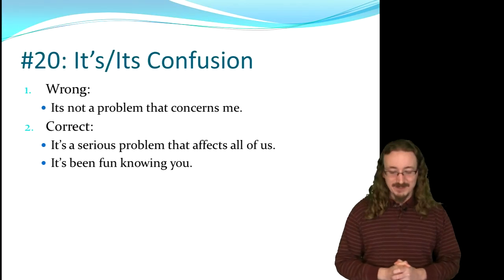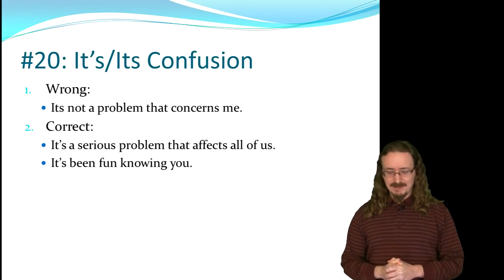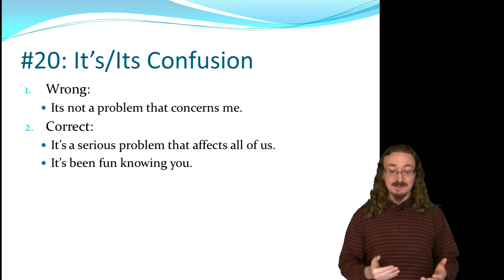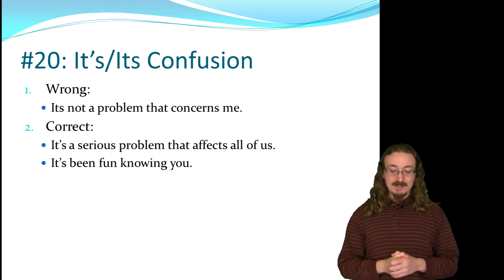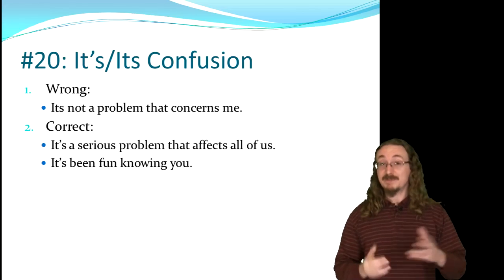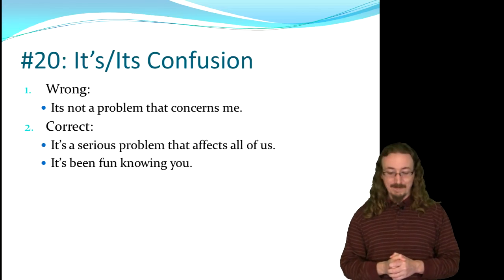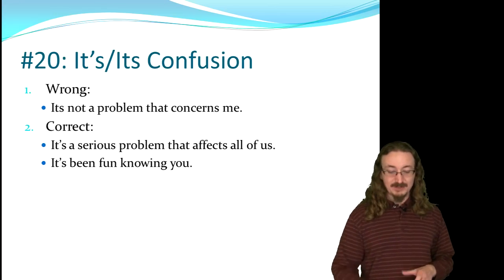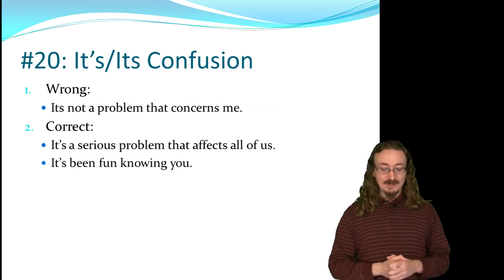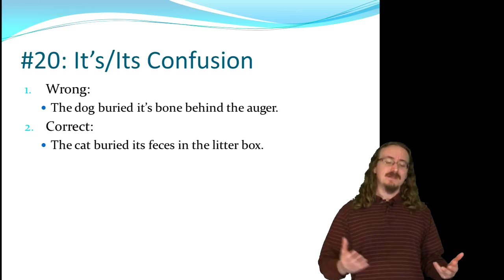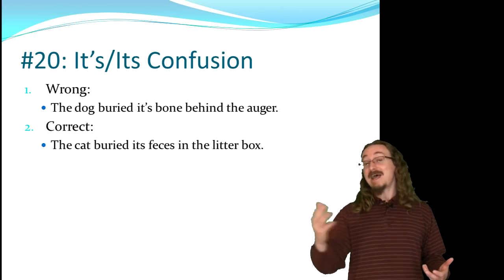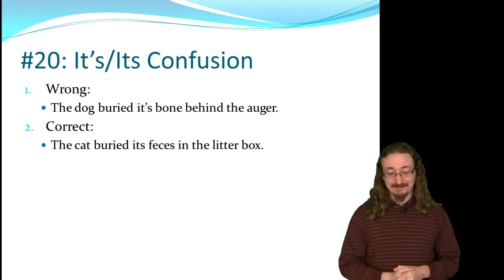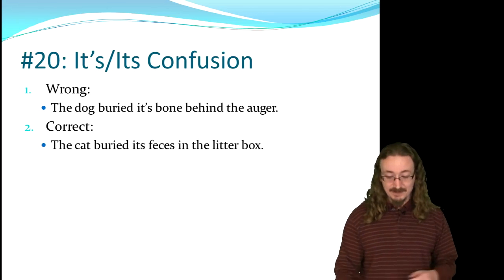Here's an example of a wrong one: 'Its not a problem that concerns me.' That is the possessive form — you need to put the apostrophe S because you'd say 'it is not a problem that concerns me.' Correct: 'It's a serious problem that affects all of us' — 'it is a serious problem.' And 'It's been fun knowing you' — that's 'it has been fun knowing you.' If you can't substitute 'it is' or 'it has,' like in 'The dog buried its bone,' then there's no apostrophe.